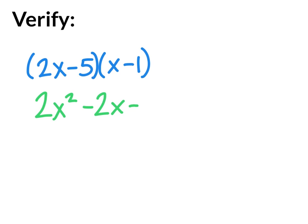With everything we always want to verify or check our solution. So if we have 2x minus 5 times x minus 1, I can use FOIL or any other method to expand that binomial. We get 2x squared minus 2x minus 5x plus 5. Simplifying gives me 2x squared minus 7x plus 5. This is exactly the same as I had before, so we know it's correct.